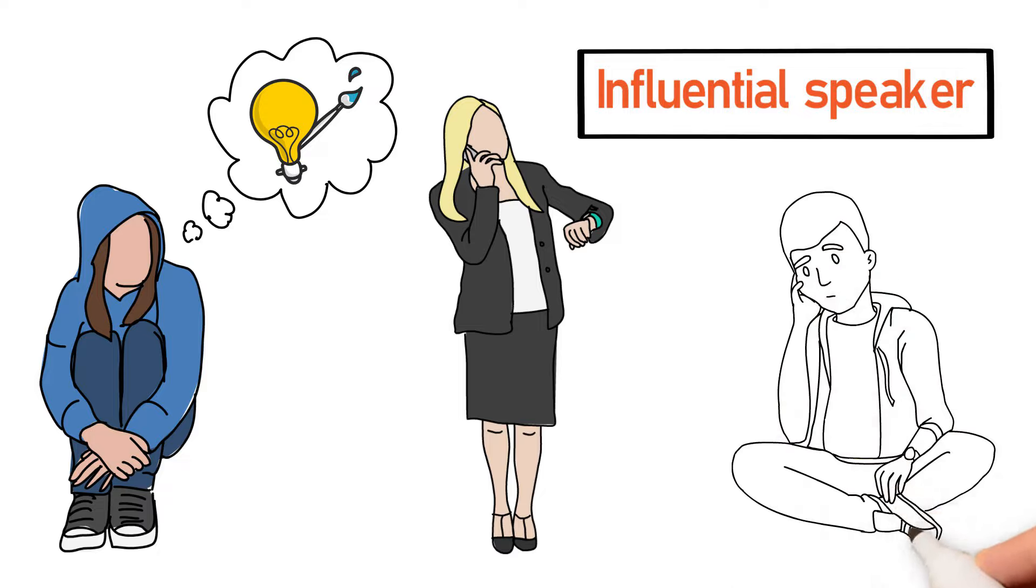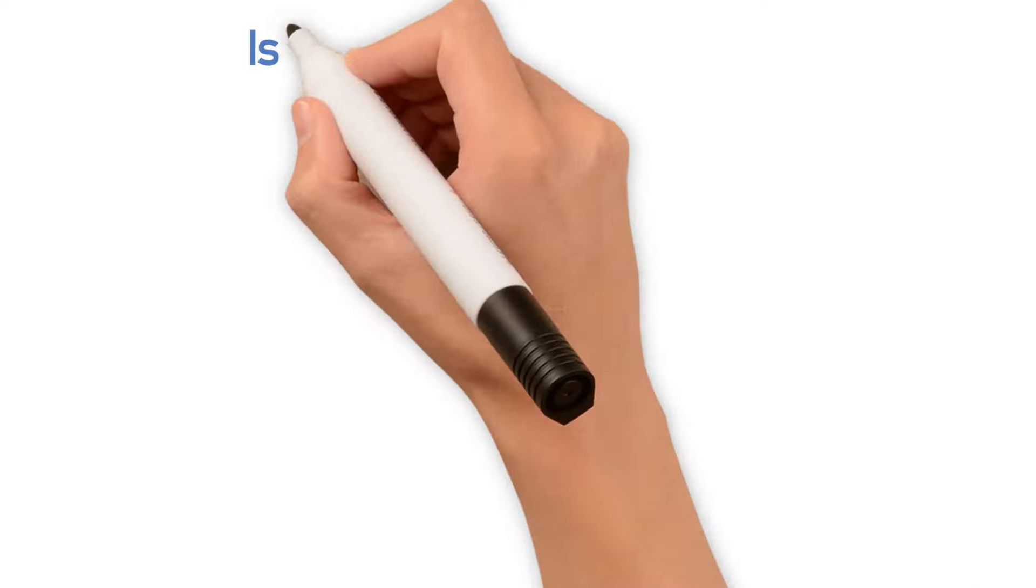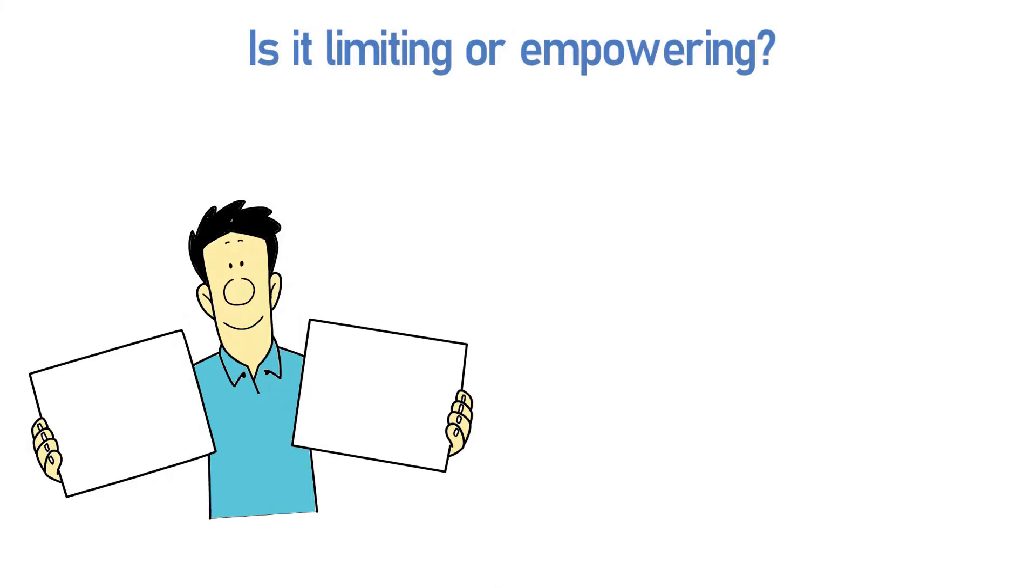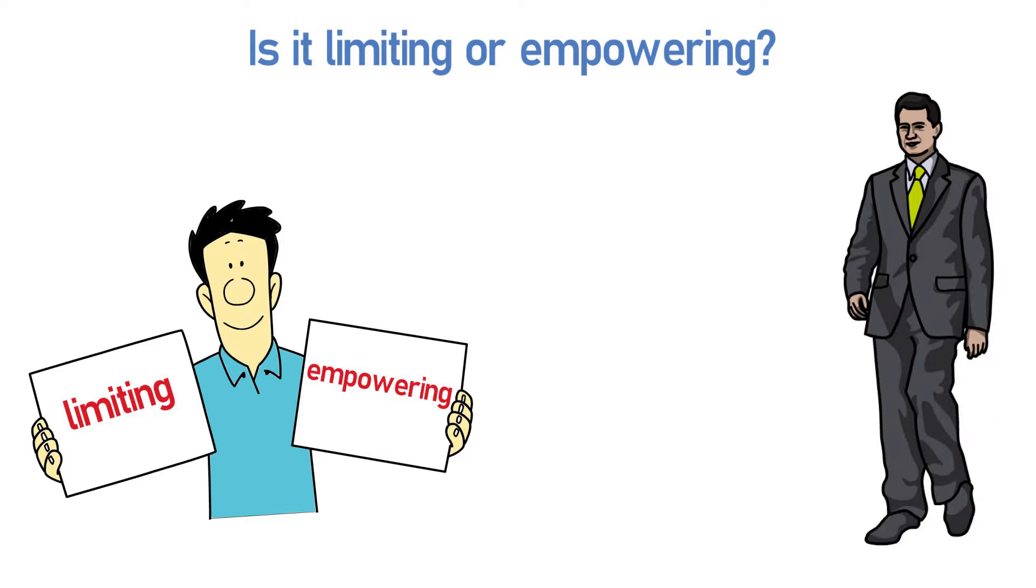Now, think about a belief you hold about yourself. Is it limiting or empowering? Try this: jot down some of your core beliefs. Label them as limiting or empowering. It's the first step in understanding how they shape your life.